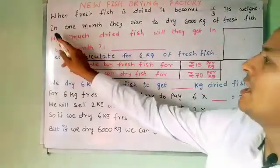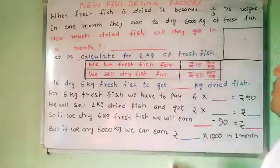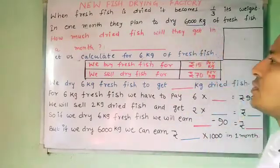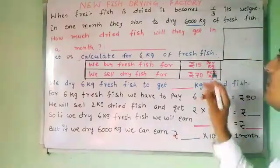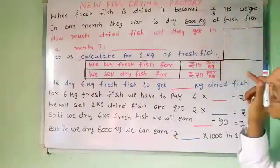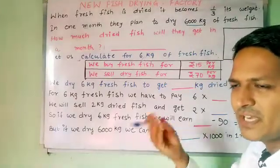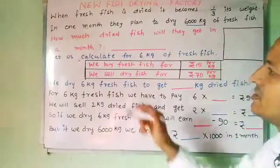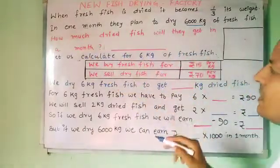So now in one month they plan to dry 6000 kg of fresh fish. They are planning to dry 6000 kg of fresh fish because they take fresh fish, dry it, and sell dried fish. So how much dried fish will they get in one month?